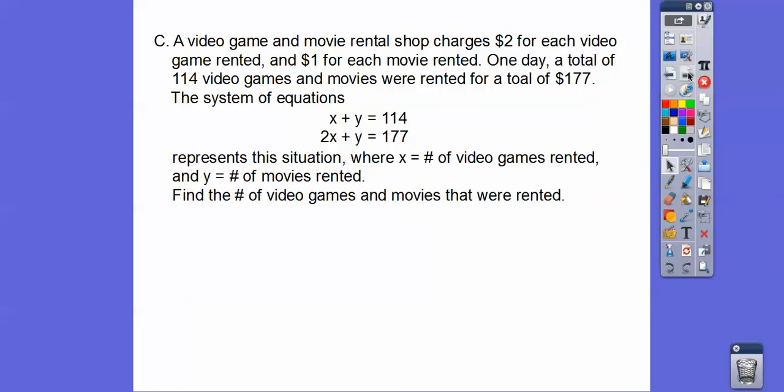Okay, so find the number of video games and the number of movies that was rented. Okay, so let's go ahead and solve. All right, here we're going to subtract so we can cancel out the Y. So X minus 2X is negative X. And 114 minus 177 is negative 63. Yep. And then so we get X equals positive 63. Here we get negative X equals negative 63. So when we divide both sides by negative 1 or multiply both sides by negative 1, we get X equals 63.